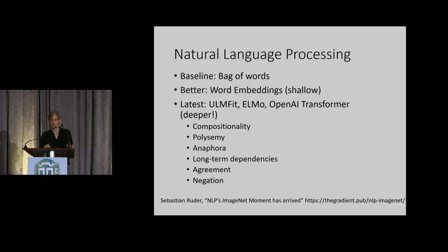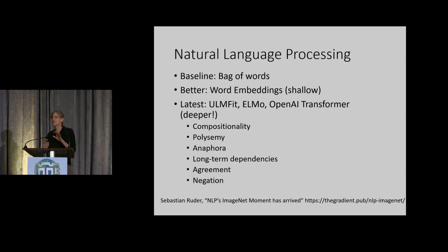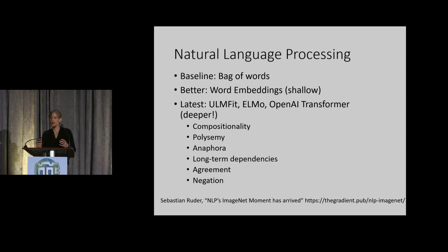Natural language processing has also benefited from deep learning. A baseline way of representing a document is bag-of-words — just whether a word is there or not, a very sparse representation. Word embeddings came along — pre-trained embeddings trained on a Twitter corpus or Wikipedia corpus — that helped understand words not just one at a time but with their neighbors. But even that is a relatively shallow way of looking at things, like an edge detector in computer vision. The latest work is going deeper, coming up with more abstract and complex features for natural language processing.